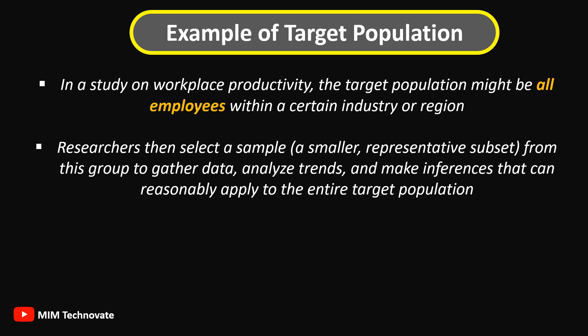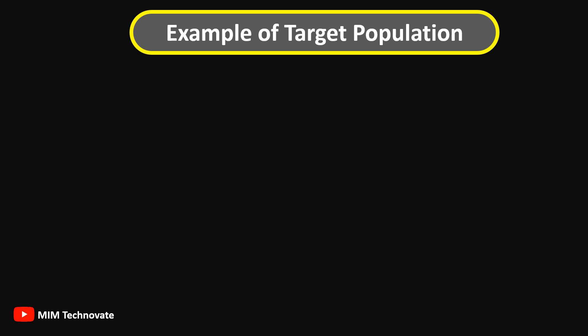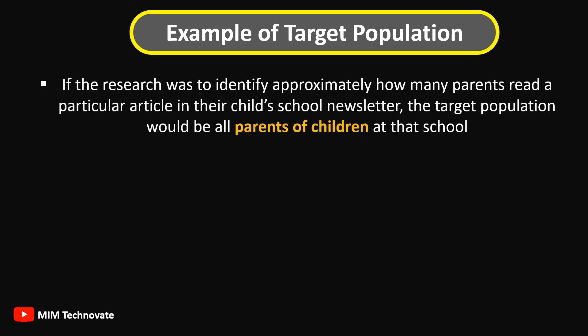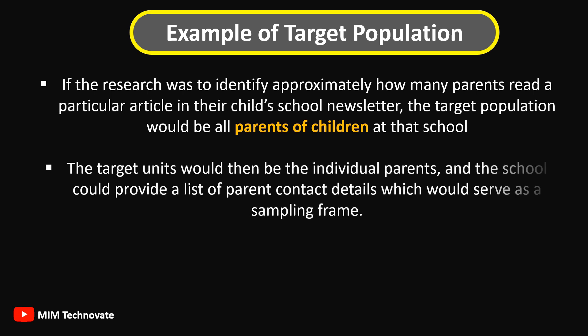Let's look at another example. If the research was to identify approximately how many parents read a particular article in their child's school newsletter, the target population would be all parents of children at that school. The target units would be the individual parents, and the school could provide a list of parent contact details which would serve as a sampling frame.